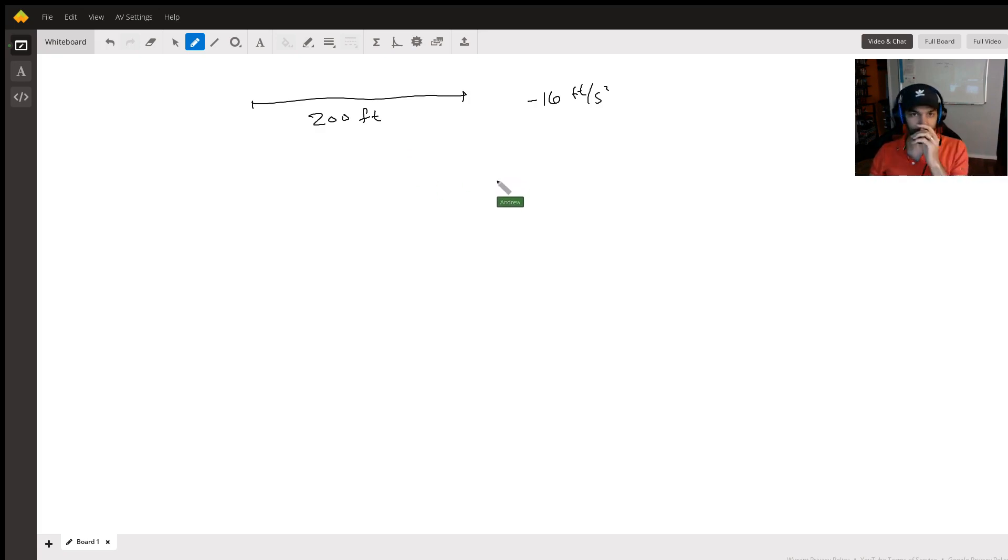So the best thing to do in something like this is start with the things that you know. What are you given? What can you figure out from what you know? So let's start with writing down what we know. So what we know here, we do know the acceleration throughout this whole process, which is constant here, it's negative 16 feet per second squared.